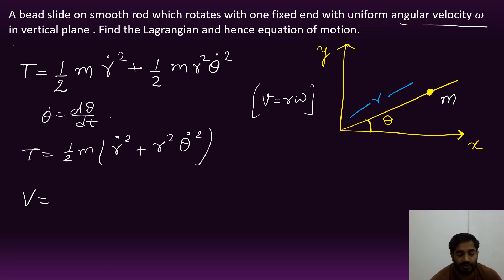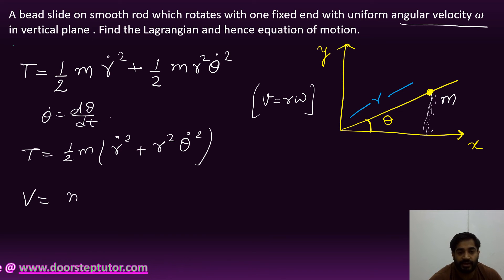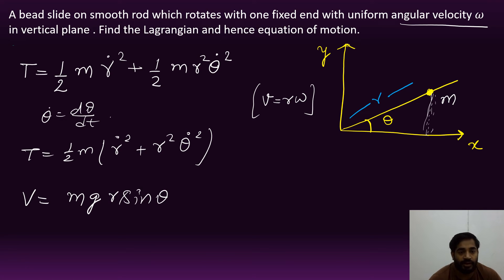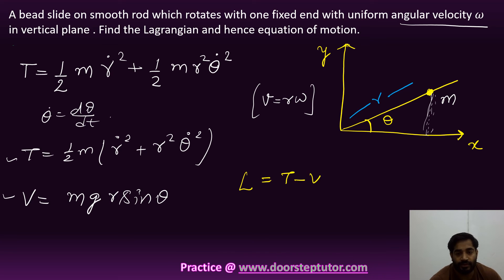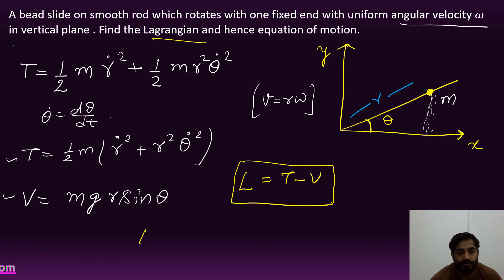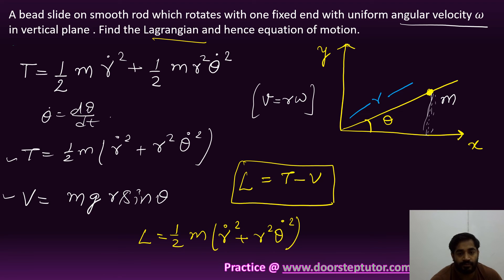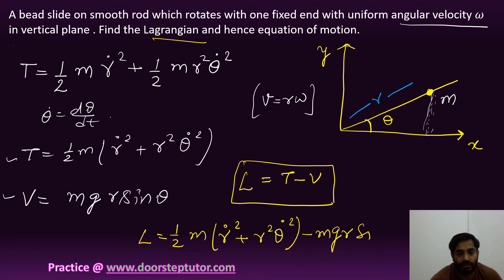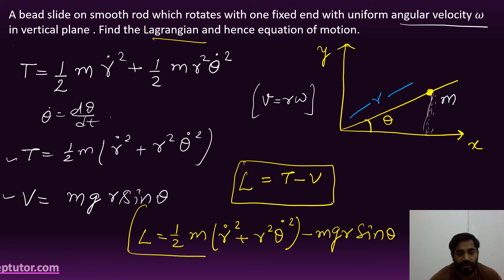Now, what is the potential energy? The potential energy relates to height h, and here h = r sinθ, so V = mgr sinθ. We now know T and V, so we can find the Lagrangian L = T − V. Therefore: L = ½m(ṙ² + r²θ̇²) − mgr sinθ. This is the Lagrangian.